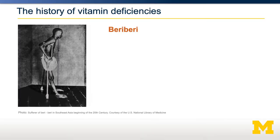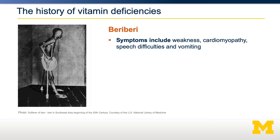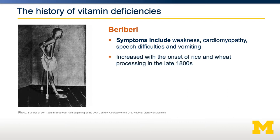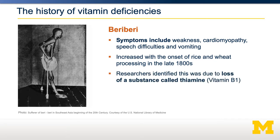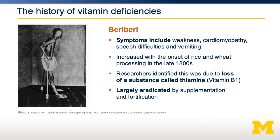Let's take a step back and talk about some of the history of vitamin deficiencies, using a disease called beriberi. You may not have heard of beriberi because it's quite uncommon right now, but with the onset of rice and wheat processing in the late 1800s, symptoms were noticed in some people, including weakness, cardiomyopathy, speech difficulties, and vomiting. Part of the processing of rice involved removing the husk, and inside that husk was an essential nutrient called thiamine — also known as vitamin B1. Once this was identified, we were able to add thiamine back into the food supply through supplementation or fortification, which has largely eradicated beriberi.